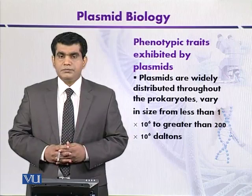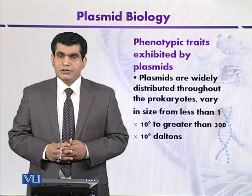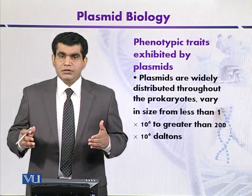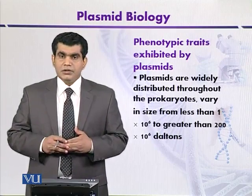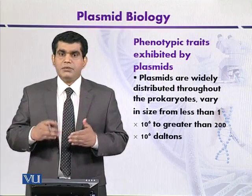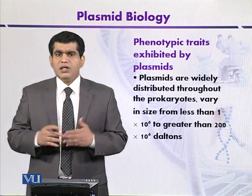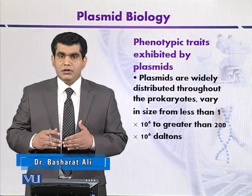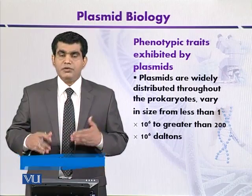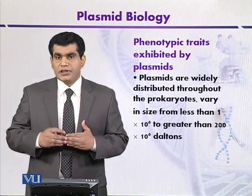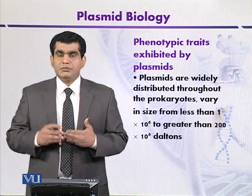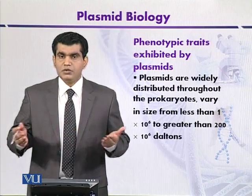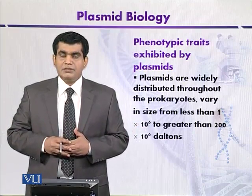For example, some plasmids contain genes that mediate antibiotic resistance of microbes. This resistance against the use of different antibiotics is mainly encoded by those genes that are present on the plasmids. This is one of the advantages that bacteria can have.